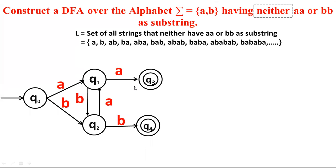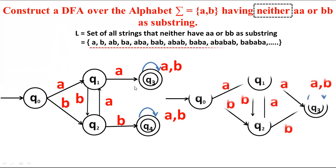Now coming to state q3: 'a' and 'b' are not yet defined, but if we draw a self-loop with 'a' and 'b' as inputs, then the condition of 'aa' as a substring remains satisfied. Similarly, on state q4, if we take a self-loop with 'a' or 'b' as inputs, then our criteria of 'bb' as a substring gets satisfied. So this is the DFA with five states. We can make this minimal, satisfying the same grammar with four states as shown.